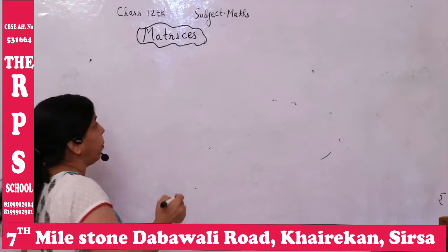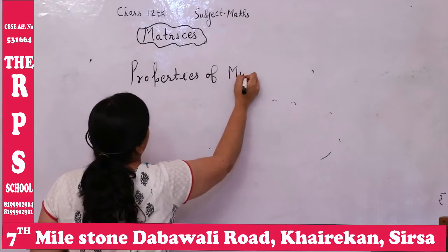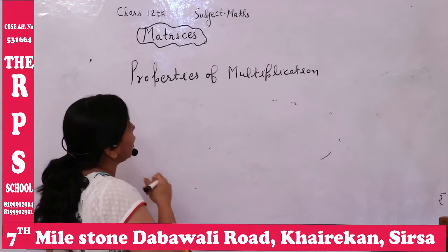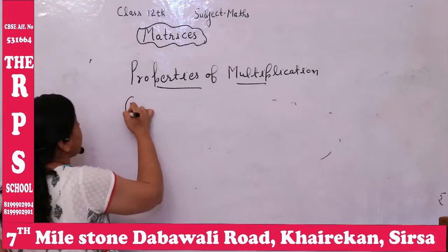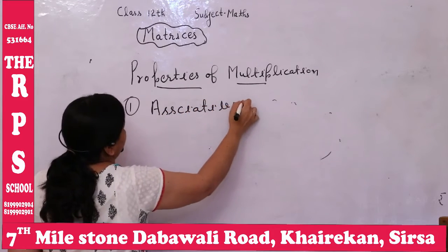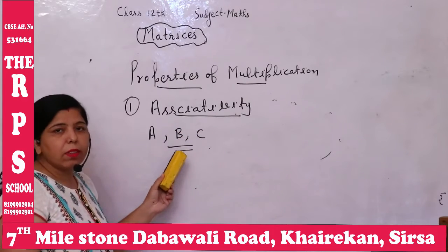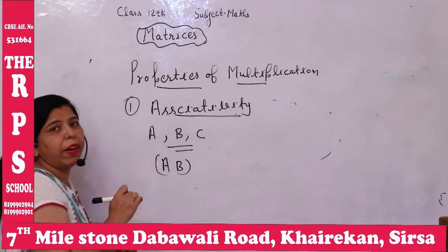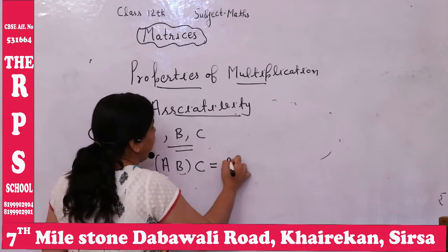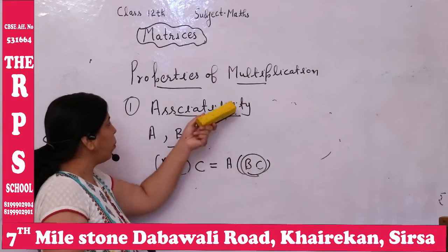Now, properties of multiplication of matrices. First is associativity. If A, B, and C are three matrices, then A(BC) = (AB)C — whether we multiply B and C first then A, or A and B first then C, the answer is the same. This is the associativity property.